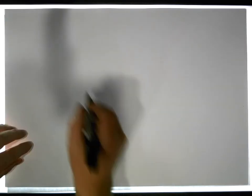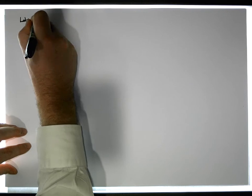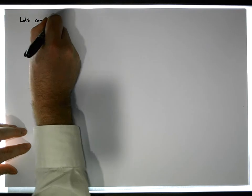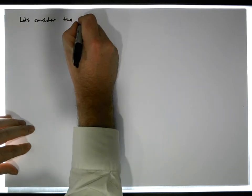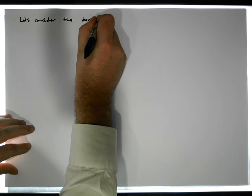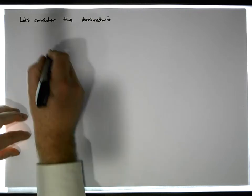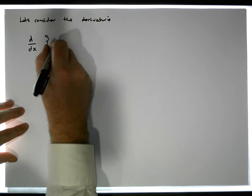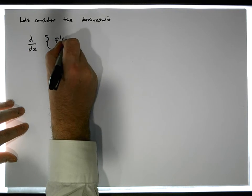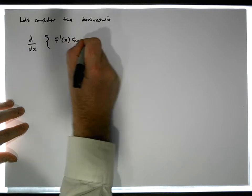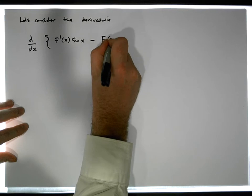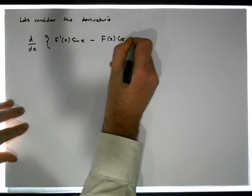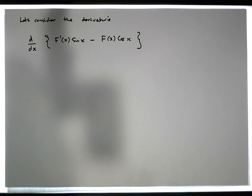Within the original proof, Niven actually presented another function. So let's consider the derivative d/dx of F prime of x times sine of x minus F of x times cosine of x. Let's consider this particular function and differentiate it.